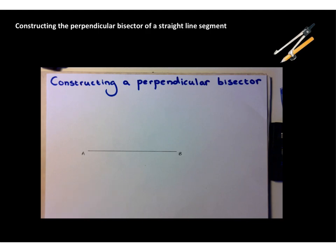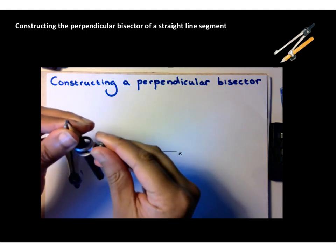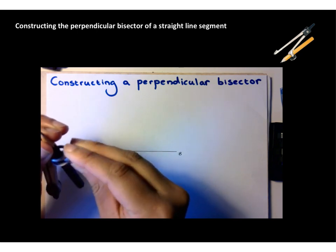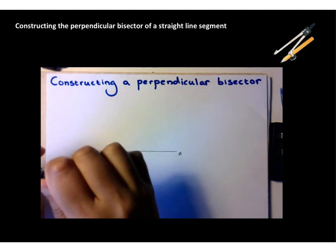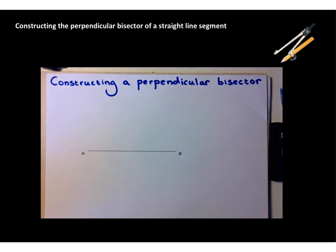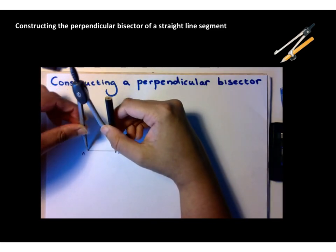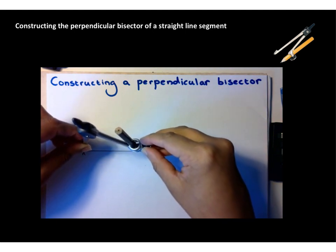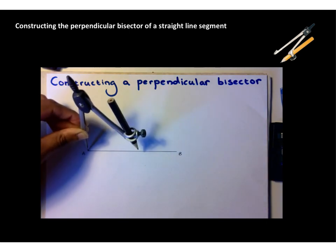Here's how we do it. First of all, make sure your compasses are set up correctly. Your pencil and the pinpoint should match as closely as possible. They should be absolutely on a level with each other for accurate drawing, and you should try and make sure you use a really sharp pencil for this. I'm going to start by placing the pinpoint at one end of the line segment at A.